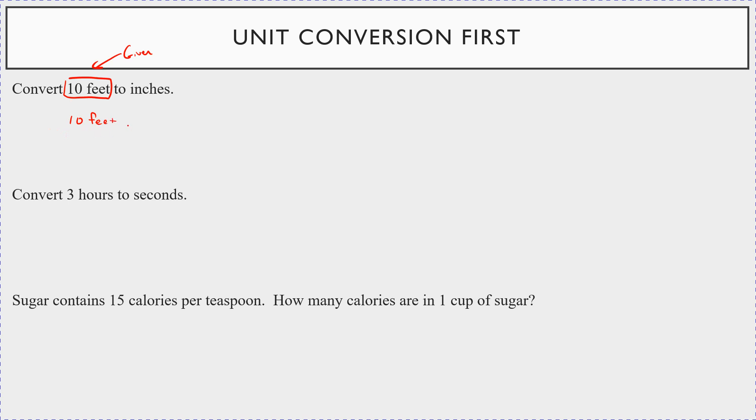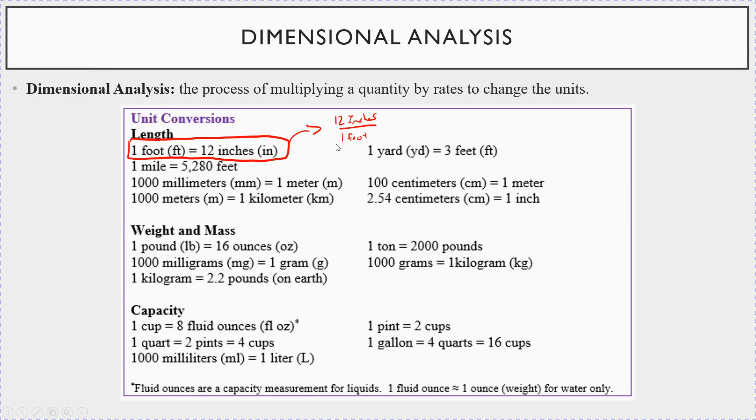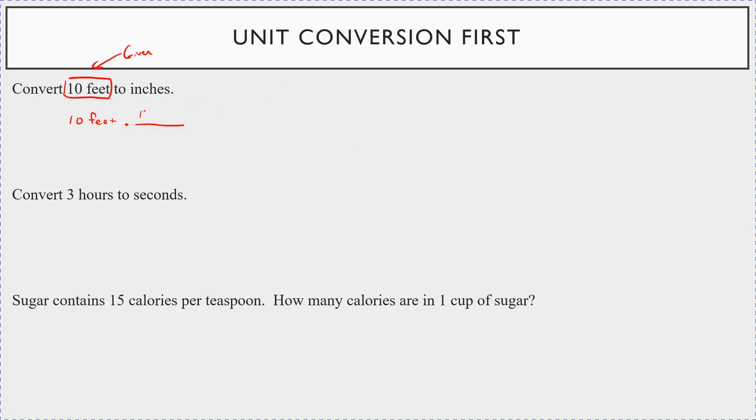So you're going to start by writing 10 feet, and then you're going to multiply it by something. And the only value you can multiply something by without changing its numerical value is one. So notice how I have a foot or feet in the bottom here. So let me multiply this by 12 inches divided by one foot and watch what happens. Feet and feet, one's in the numerator, one's in the denominator. They cancel out. And then really all you're left with is 10 times 12 inches. And what's 10 times 12? That's 120 inches. So in 10 feet, we started with 10 feet and we just converted it to 120 inches.